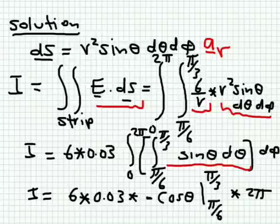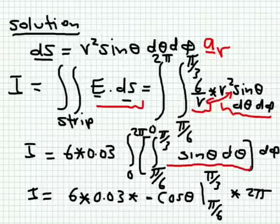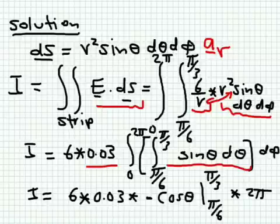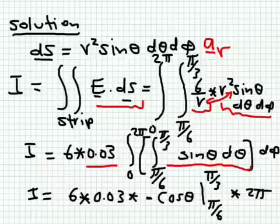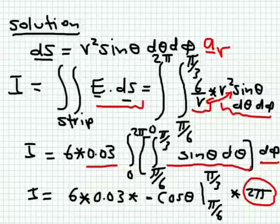We first integrate sine theta d theta with respect to theta from pi over 6 to pi over 3. Since sine(pi/3) equals root 3 over 2 and sine(pi/6) equals one half, we can compute this. Note that 6/r multiplied by r² gives 6r, and r here is constant equal to 0.03 meters. After integrating with respect to theta, we integrate with respect to phi: the integral of d phi from 0 to 2 pi gives 2 pi. Combining all terms yields the final numerical answer.